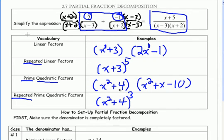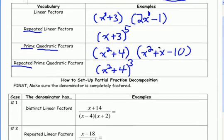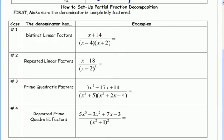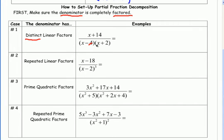That's the terminology we'll use when talking about how to set up partial fraction decomposition. No matter what, the first thing you must do is factor the denominator completely — that's always the first step to decompose a fraction. Decomposing a fraction means taking one fraction and splitting it into multiple fractions. There are four cases. In the first case, you're given distinct linear factors — distinct means the factors are unique from each other, so x minus 4 is a different factor from x plus 2.